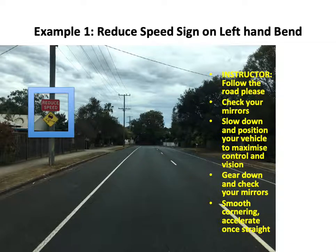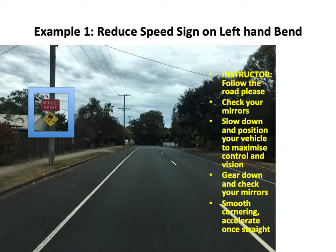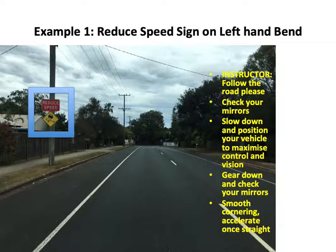Example one: reduce speed sign on left-hand bend. You can see on the left side of the picture there's a reduced speed sign and a warning sign denoting slippery when wet. Drivers should check their mirrors, slow down and position your vehicle to maximise control and vision. Gear down and again check your mirrors. Take the corner smoothly and accelerate once out of the corner and the wheels are straight.